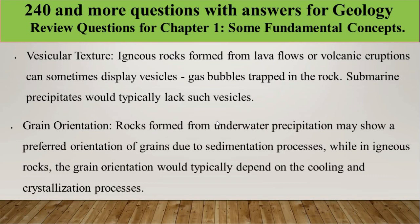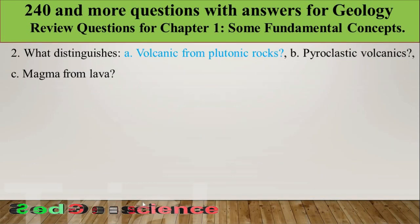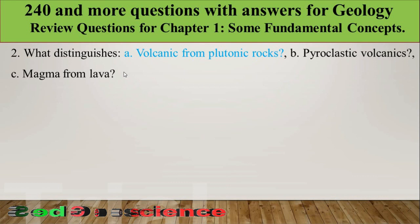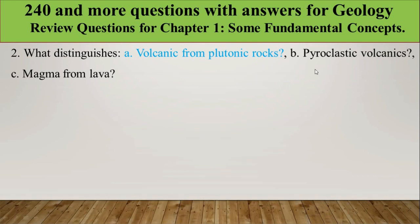Another textural criterion is grain orientation. Rocks formed from underwater precipitation may show a preferred orientation of grains due to sedimentation processes, while in igneous rocks, grain orientation typically depends on the cooling and crystallization process.